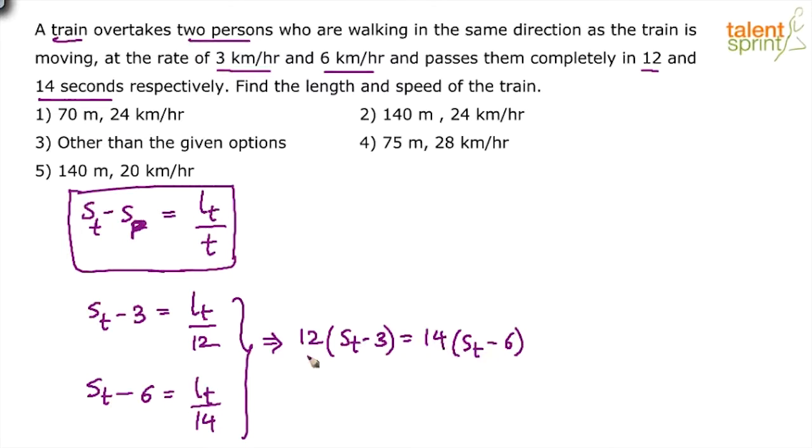So solve now 14 ST minus 12 ST. So 2 times the speed of the train is equal to 36 minus 36 plus 14 into 6 is 84. 84 minus 36, right? 48.